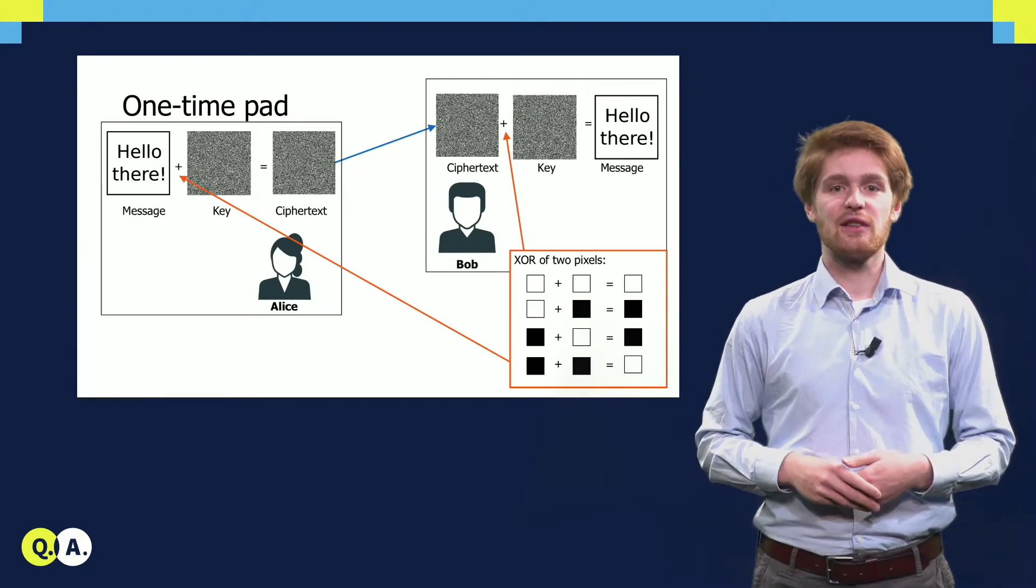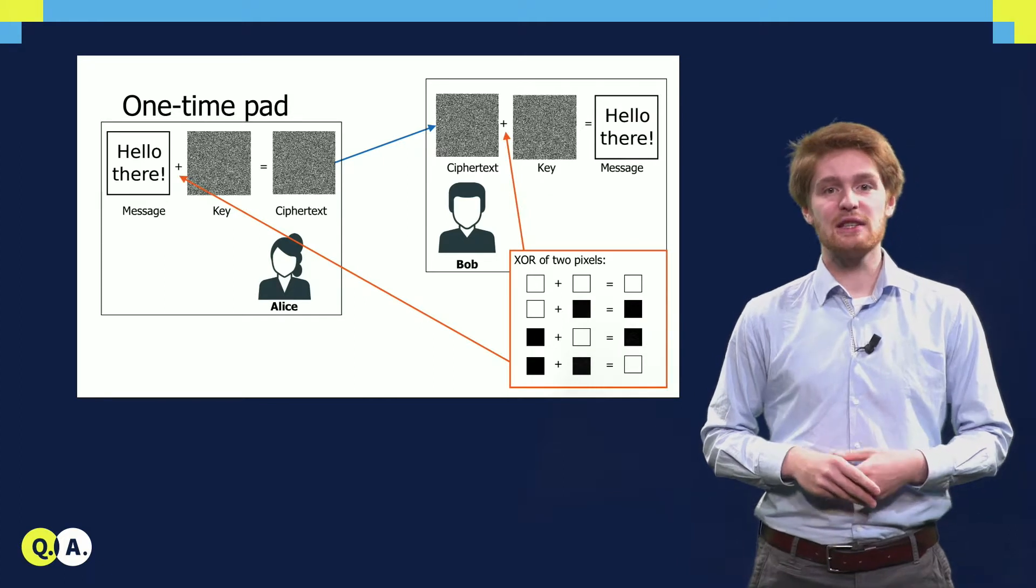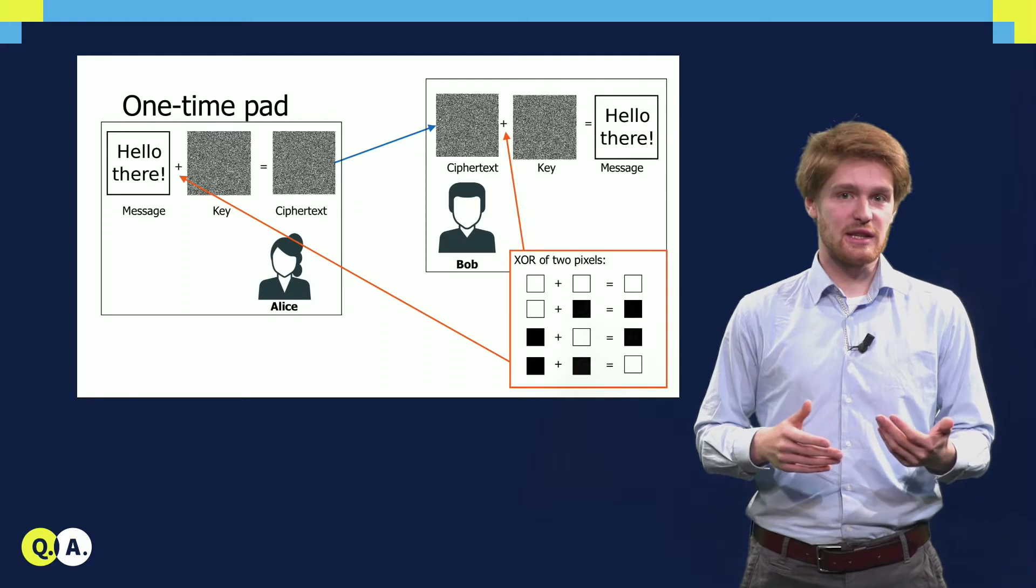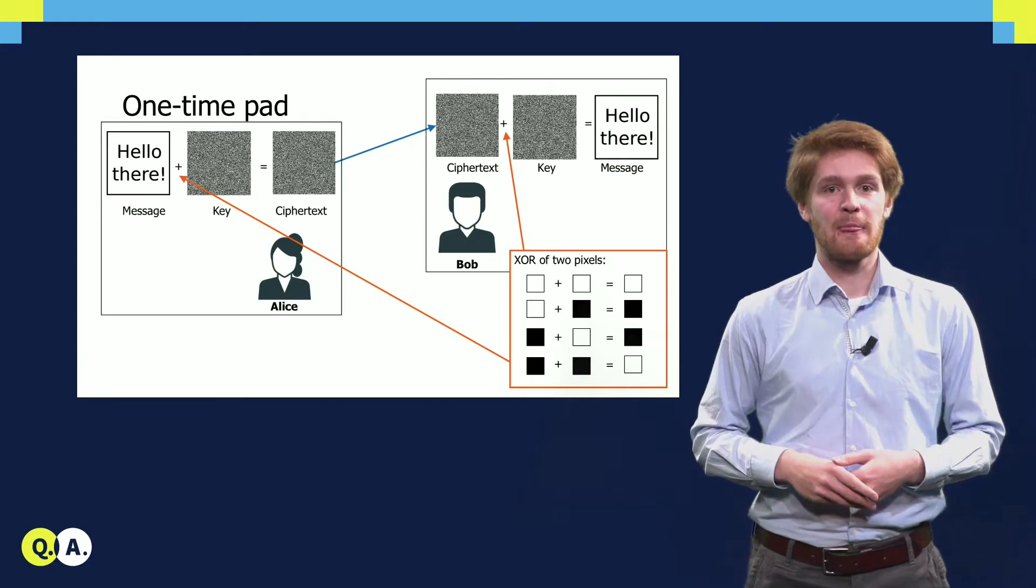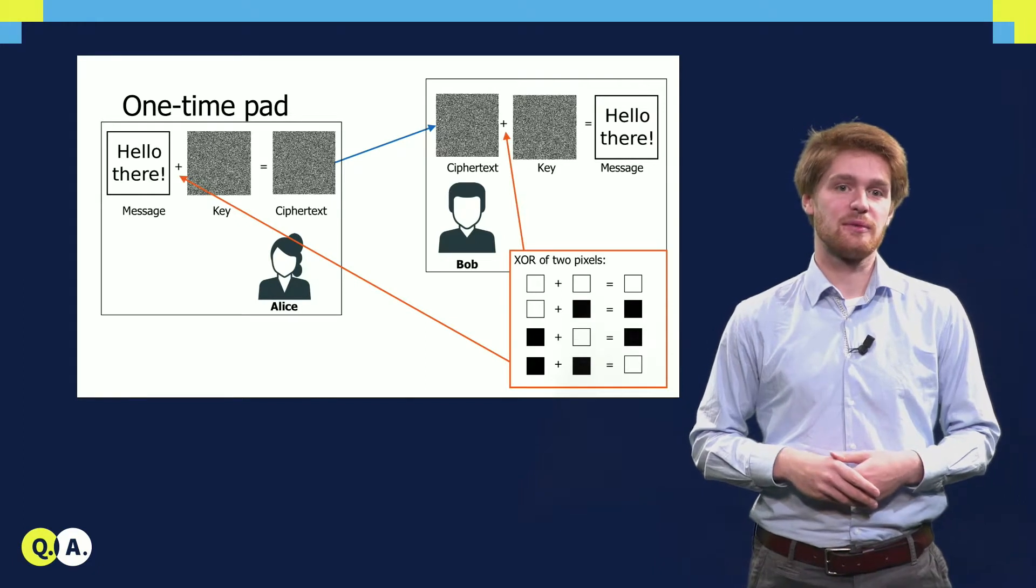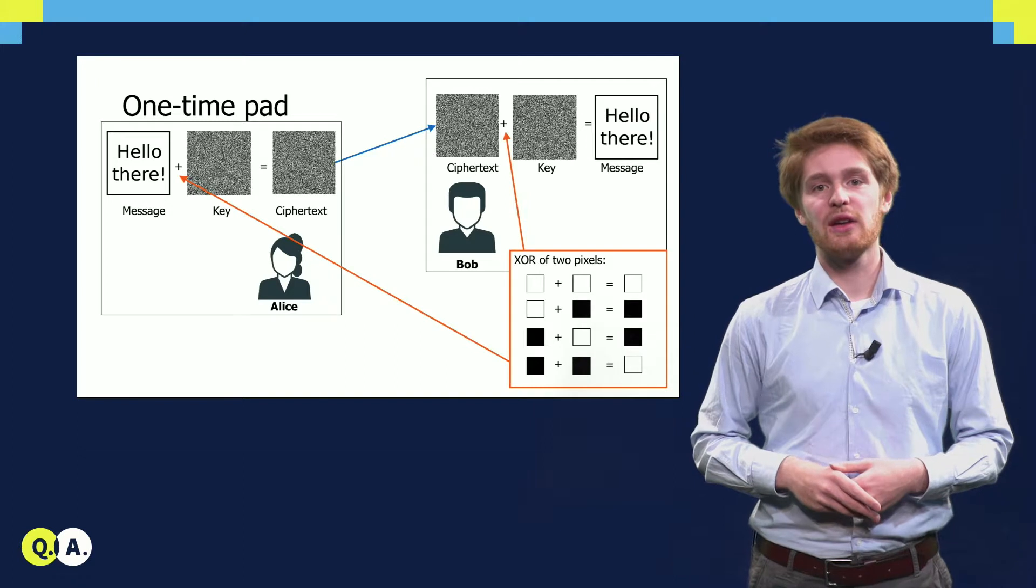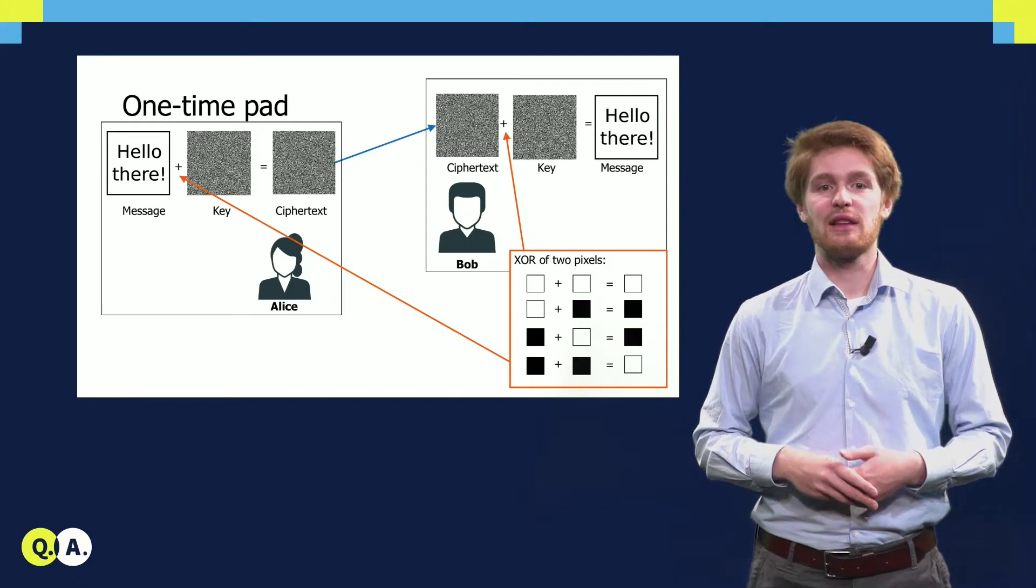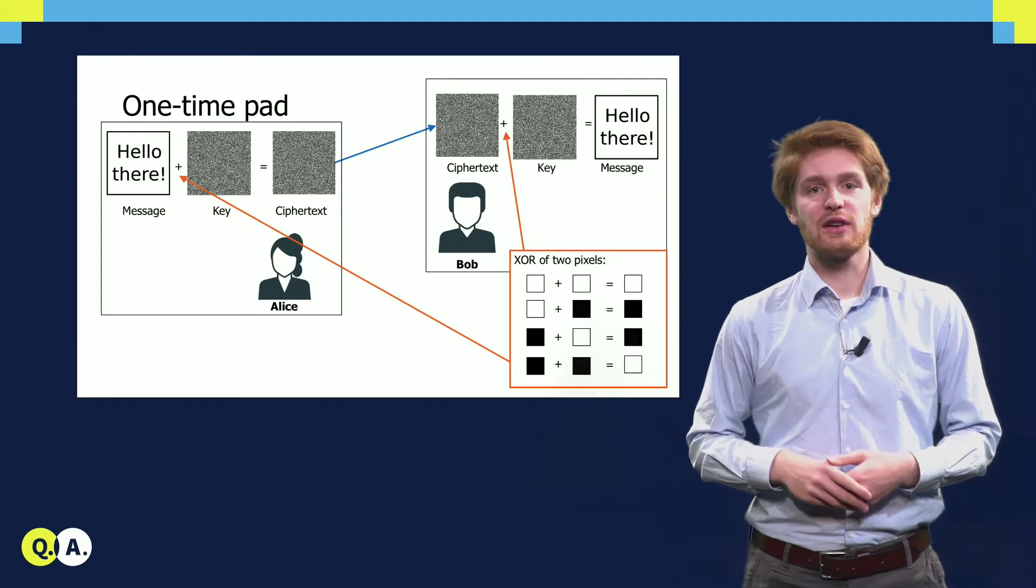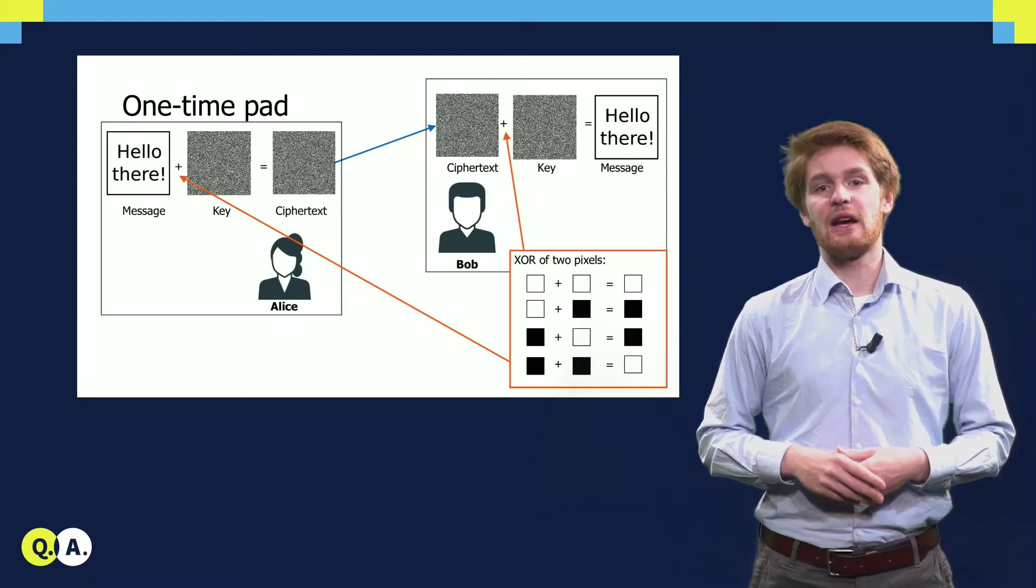Bob then receives the ciphertext and does exactly the same as Alice did. He takes the pixelwise-xor of the ciphertext and the key, the key which he had copied from Alice beforehand, and if you take the xor of these two messages, out comes the original message. It might take a bit of thinking to understand why you get the original image back, if you take the pixelwise-xor with the key twice. I encourage you to try to understand why this is the case indeed.